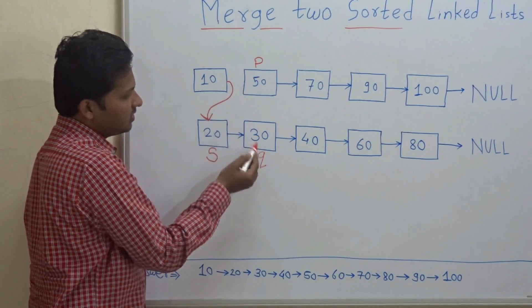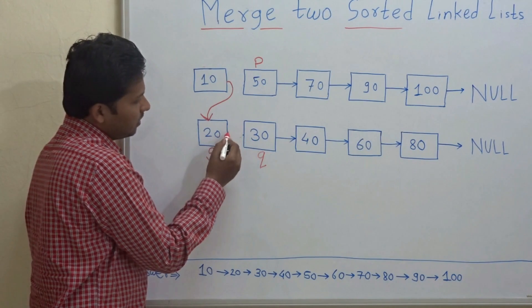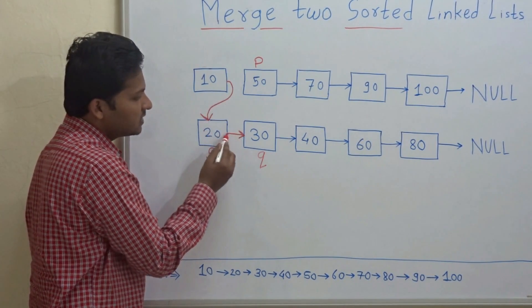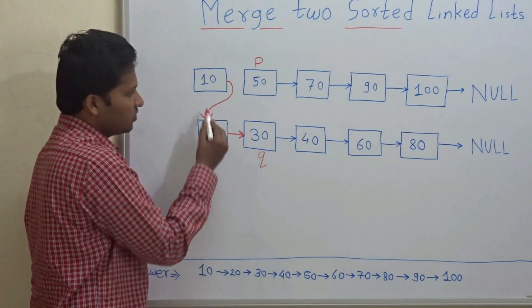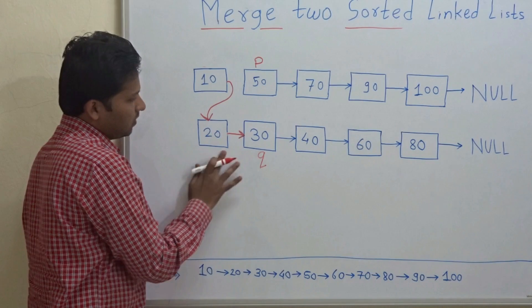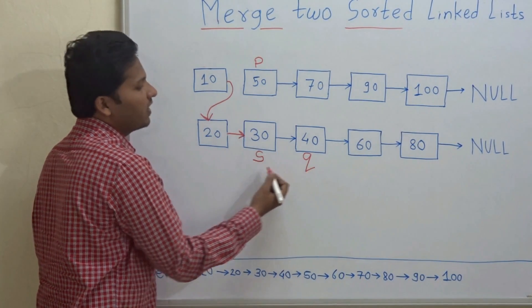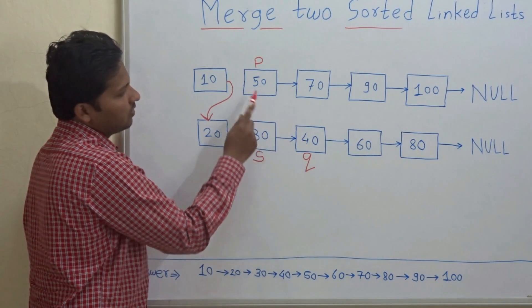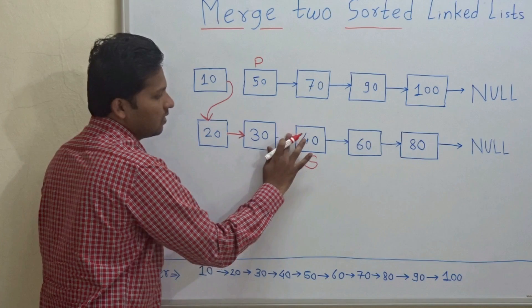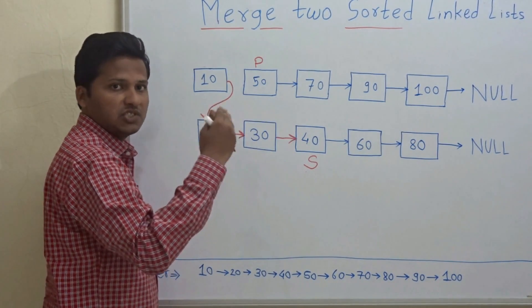Now let's compare P and Q again. 30 is less. So there is already no need to form a new link, but just for understanding I am making this link in red color so that we can trace the resultant linked list afterwards. As 30 is lesser, S will point here now. As per the rule, Q will point to the next node of S. Comparing again: 50 vs 40 — 40 is lesser. So S will point here; this link will become red as it is part of the new sorted merged linked list.